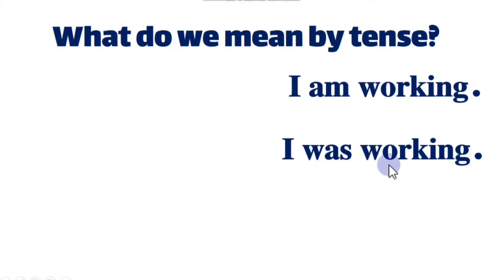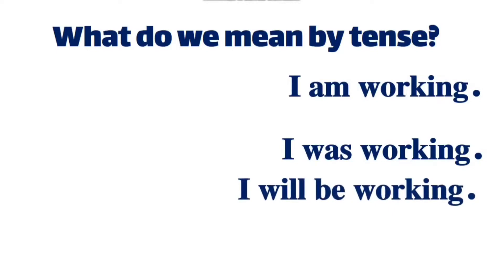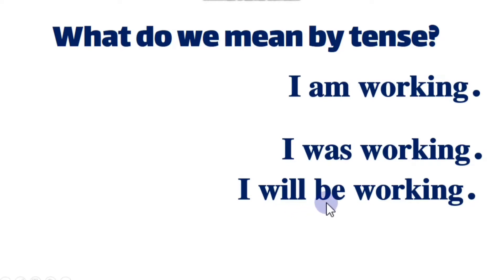If I further want to change the tense of this sentence — let's say to the future continuous — again I have to change the form of this verb. The main verb is in -ing form; however, the auxiliary is changed. There is 'will' and 'be' — this is future continuous. So as I said, tense is the form of a verb. We make different tenses by changing different forms of the verb.